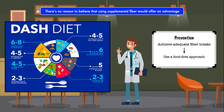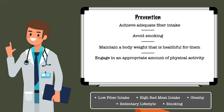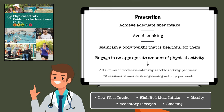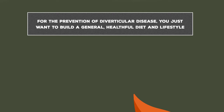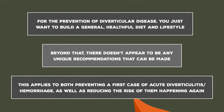Other recommendations for prevention can be extrapolated from the risk factors for progression to complications. Patients should avoid smoking, achieve or maintain a body weight that's healthful for them, and engage in an appropriate amount of physical activity. Recommendations for physical activity can be found in the Physical Activity Guidelines for Americans, which state that adults should perform at least 150 minutes of moderate-intensity aerobic activity and two sessions of muscle-strengthening activity per week. For prevention of diverticular disease, you want to build a general healthful diet and lifestyle — there don't appear to be any unique recommendations beyond that, whether preventing a first case or reducing the risk of recurrence.